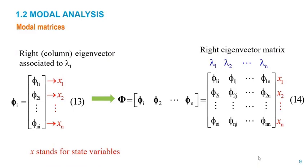From linear algebra, we know that any matrix from which we can extract eigenvalues also has right and left eigenvectors. Each eigenvalue has a set of right and left eigenvectors associated with it. The right eigenvectors of a given eigenvalue have n elements, each usually a complex number related to the state variables, sorted according to the order of the differential equations defined in the state-space representation. We have a matrix of right eigenvectors, and each column is associated with a given eigenvalue.